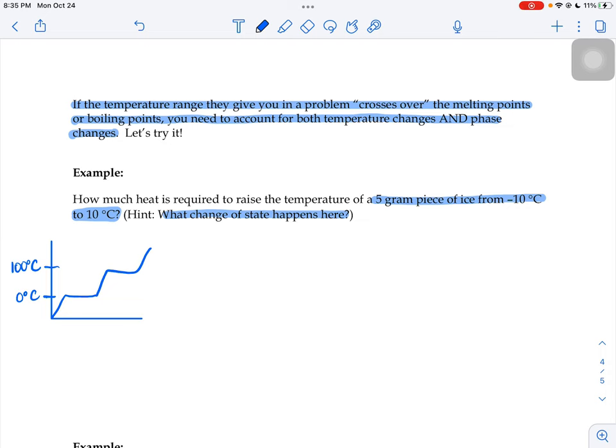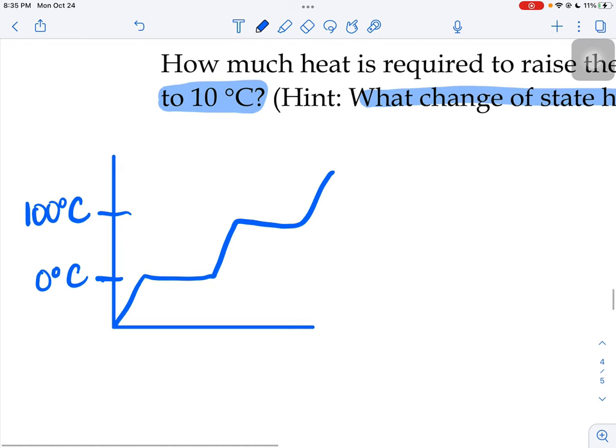The next thing you're going to put on your graph are the temperatures that it gives you in the problem. In this problem, it says we're going from negative 10 to positive 10. Negative 10 would be below zero, and positive 10 is going to land between the zero degrees and 100. I'm starting here and I'm ending here.